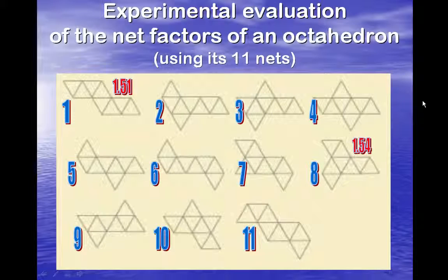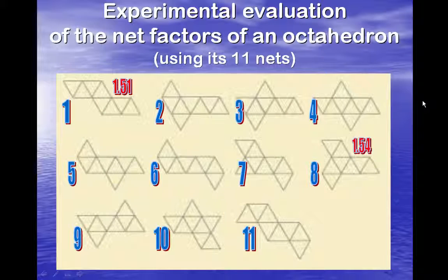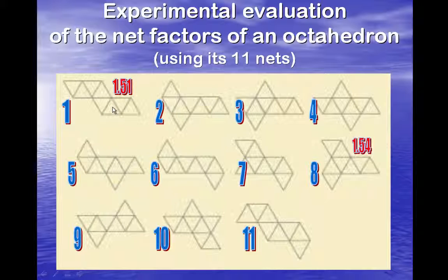What about the experimental evaluation of the net factors of octahedra? There are eleven nets — we know that — because the octahedron is the dual of the cube. We have evaluated two of them: this one, which is the cabrinet, and another one which we have constructed to evaluate the net factor. We cannot say the values are concentrated, but they are not too far from each other.